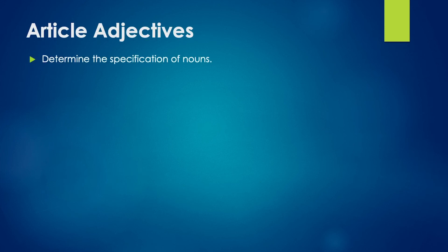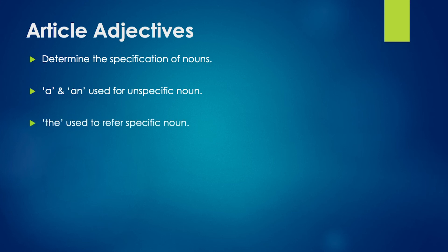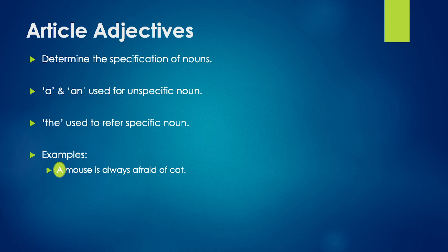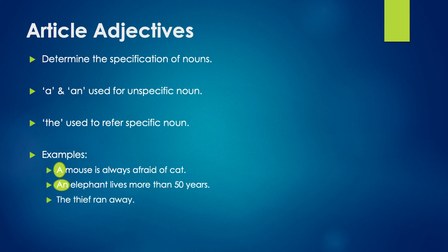Articles determine the specification of nouns. A and an are used to refer to an unspecific noun, and the is used to refer to a specific noun. For example, a mouse is always afraid of cat — the noun mouse refers to any mouse, it is not specific, so a is the article. An elephant lives more than 50 years — the article is an. The thief ran away — the article of the sentence is the.